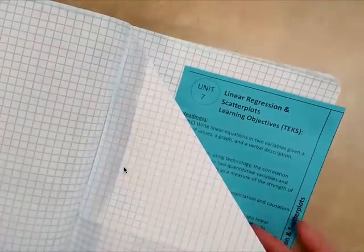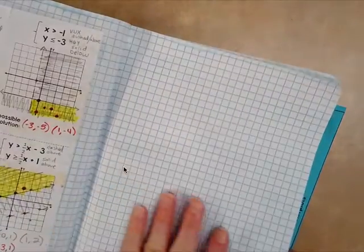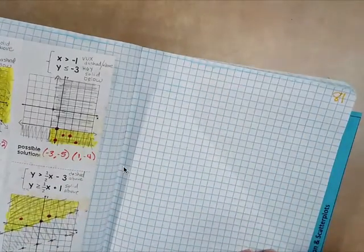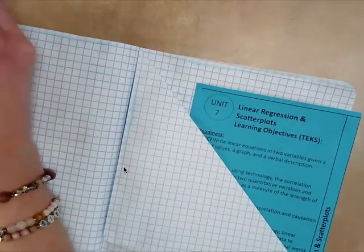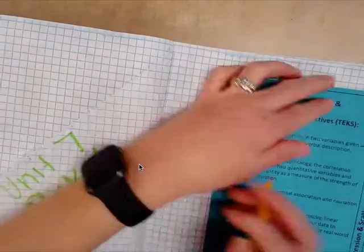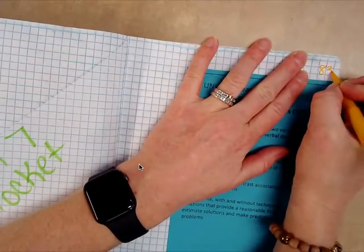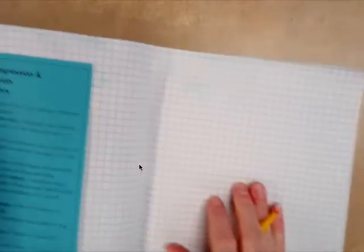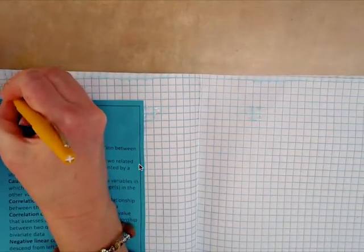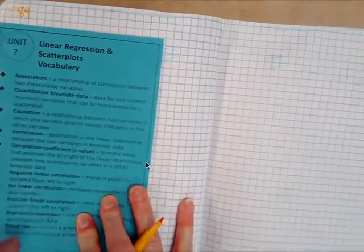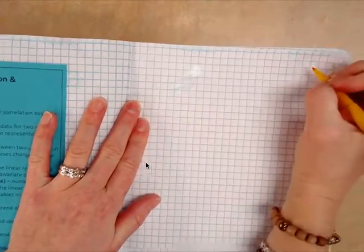Then you are going to go ahead and go to the next page, so if you are right along with me, then you should have your unit pocket at page 82, and then page 83, you have your unit divider. So 84 is the vocab that's associated with it, and so we'll put our first foldable on page 85.